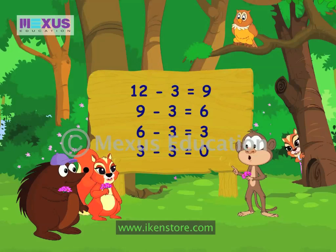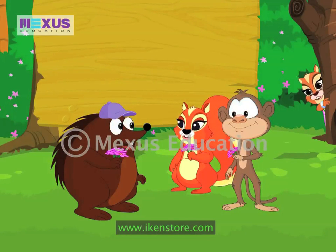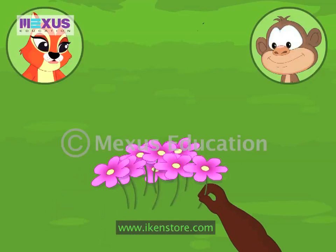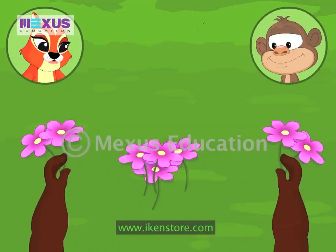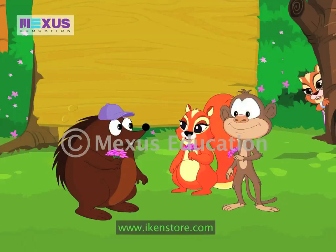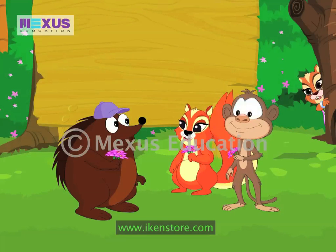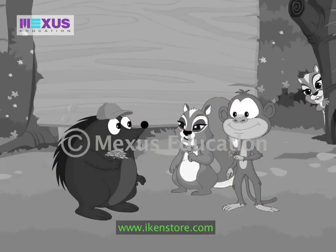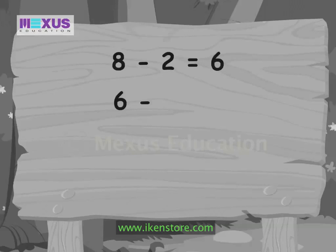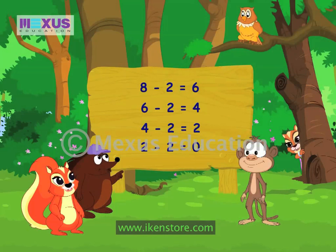I have a division problem for you, Pokey. How can you divide eight flowers between Amber and me? First, let's put back our flowers into a pile here. I have eight flowers in this pile. Here is how I divide. There you are. Nothing left. I took out two flowers at a time and gave one flower to each of you. How many times did I take away two flowers from the pile? Four times. Eight divided by two is the same as subtracting two from eight four times.